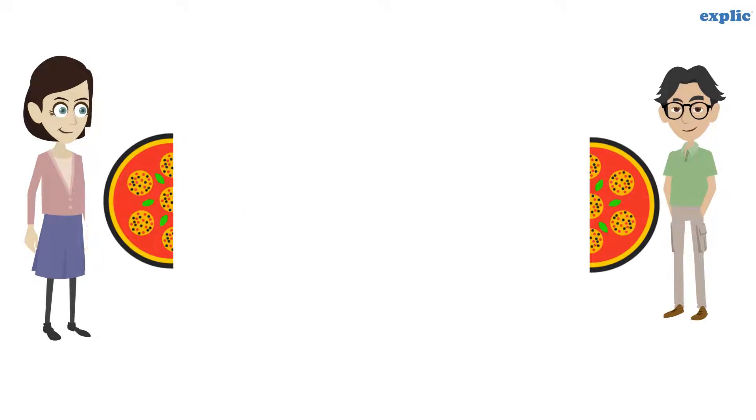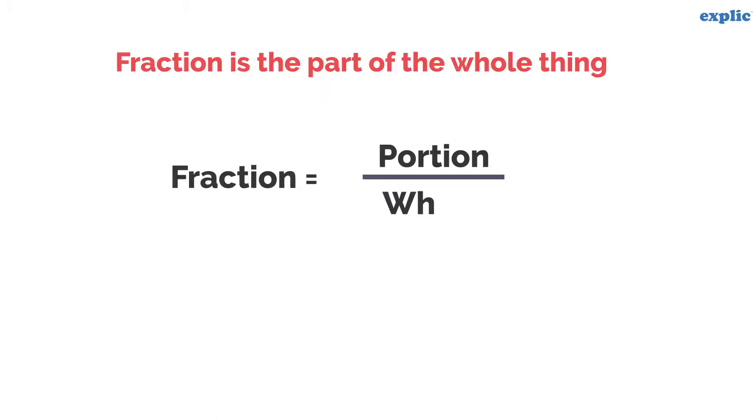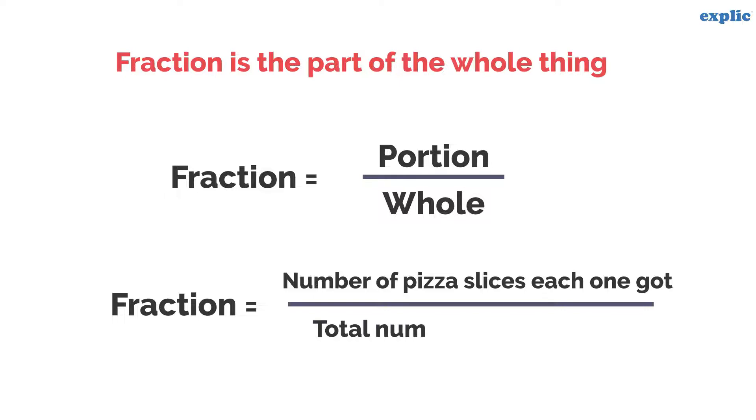What is the fraction of pizza each one of them got? The fraction is the part of the whole thing. Hence, it can be written as portion divided by whole. In this case, you can also write the fraction is equal to the number of pizza slices each one got divided by the total number of pizza slices.